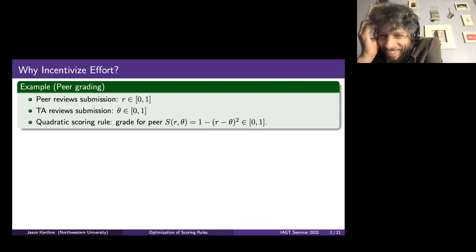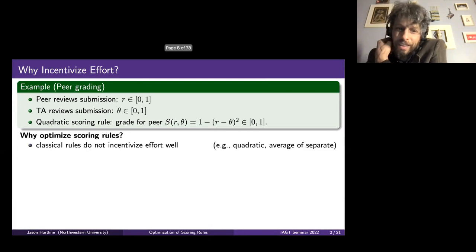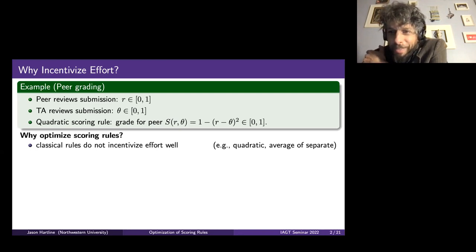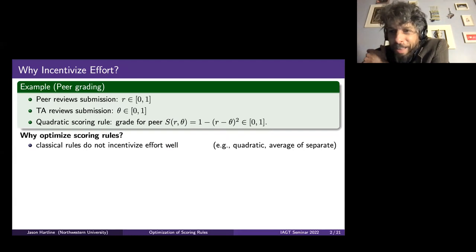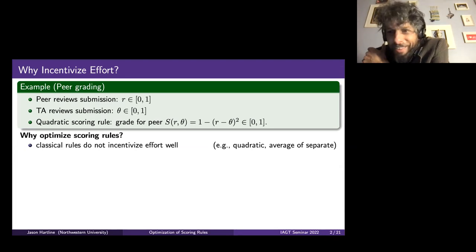I could do this, but I actually don't recommend it — it's a horrible idea. I want to talk about why to optimize scoring rules. If you try doing the standard things, you're going to be a little bit sad, especially in this peer grading application. I've noticed that other times people use scoring rules, they often end up being sad. For example, in Mechanical Turk experiments, people try to elicit behavior using incentives and notice that Turkers don't really respond that much. I think that's part of the same story.